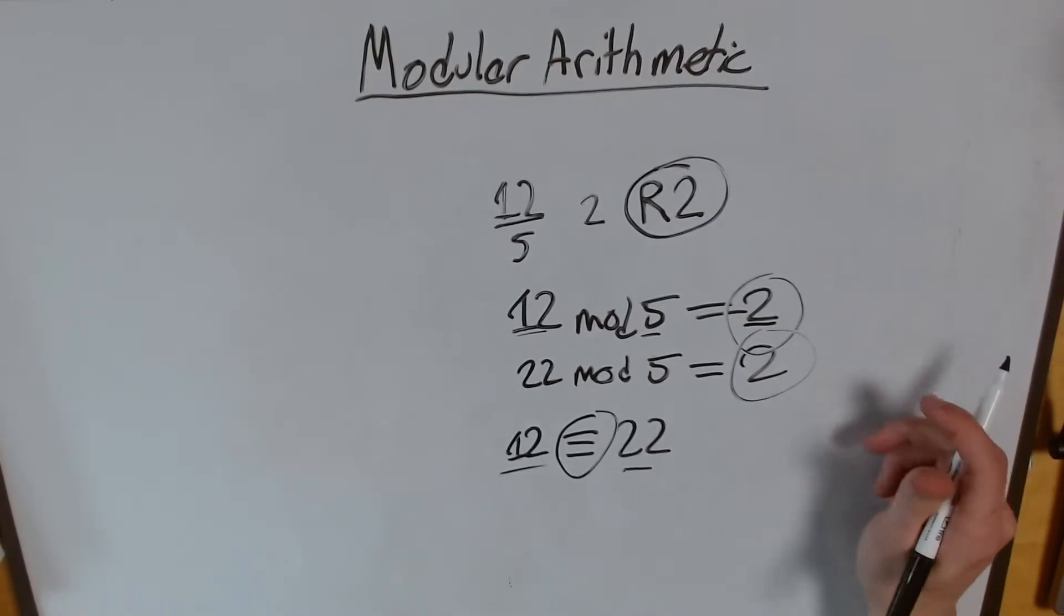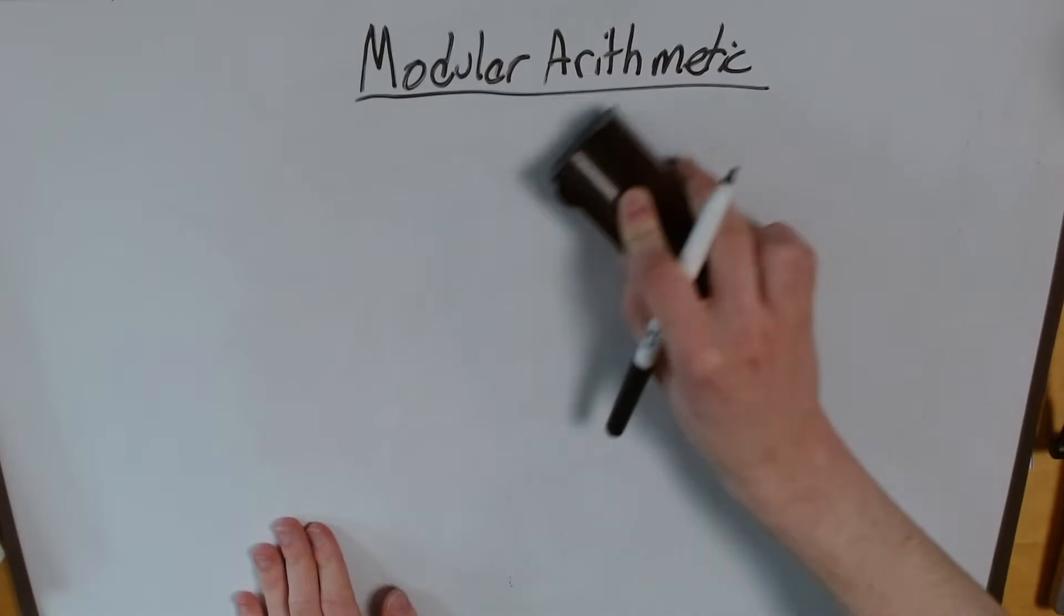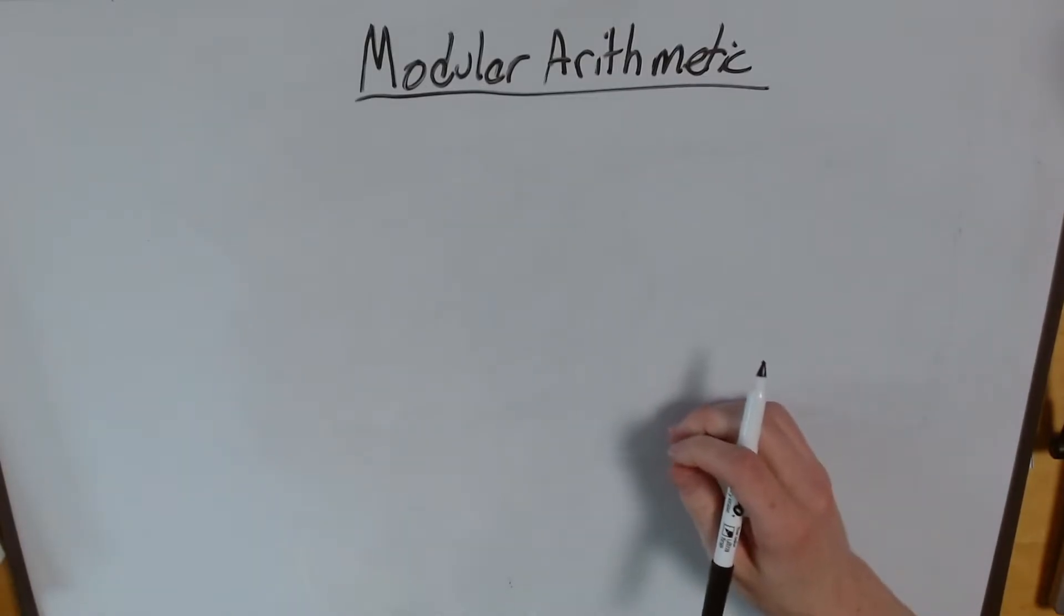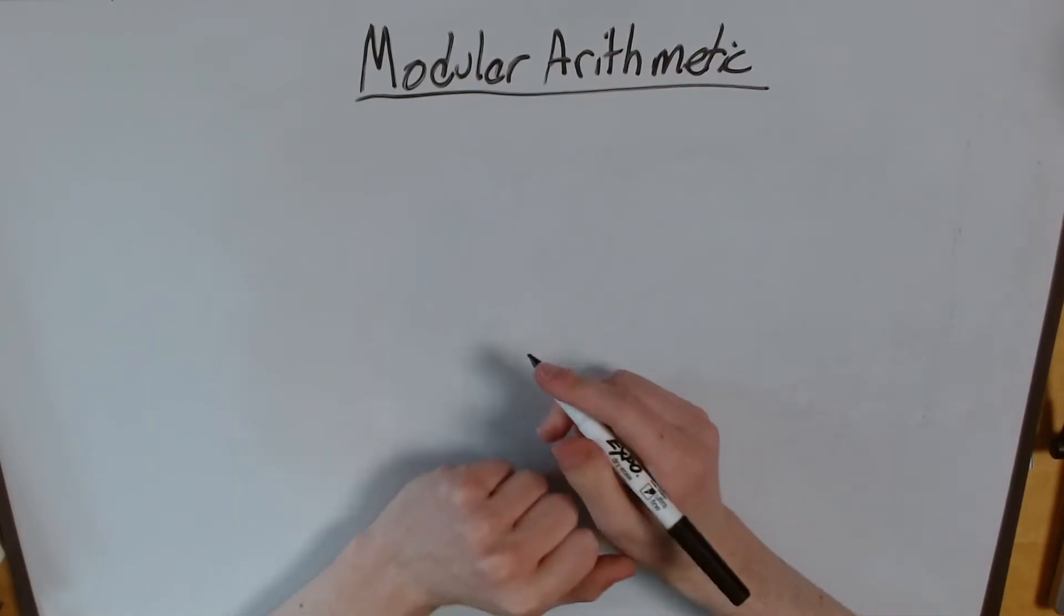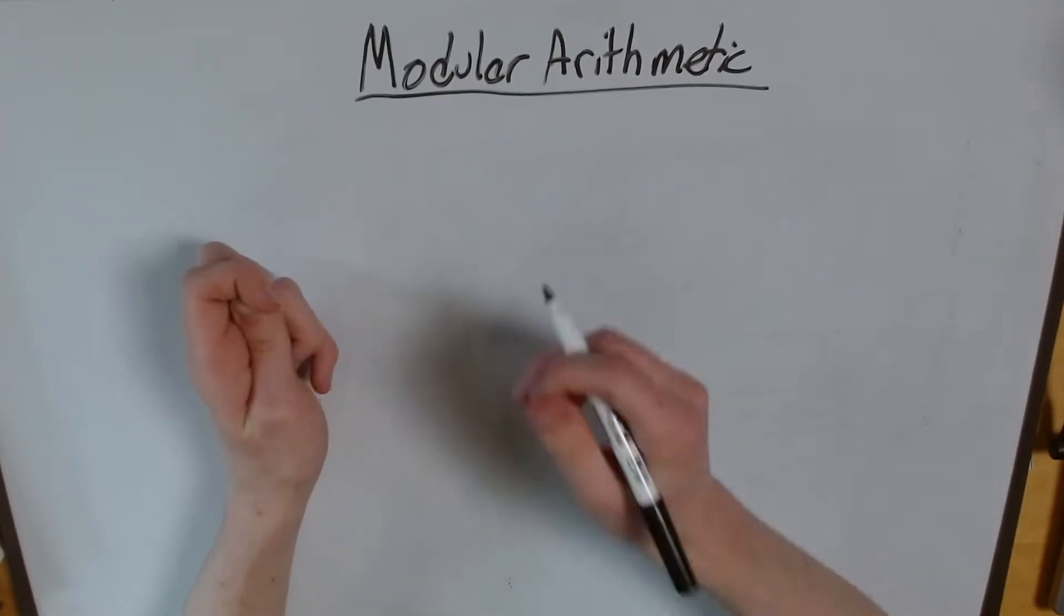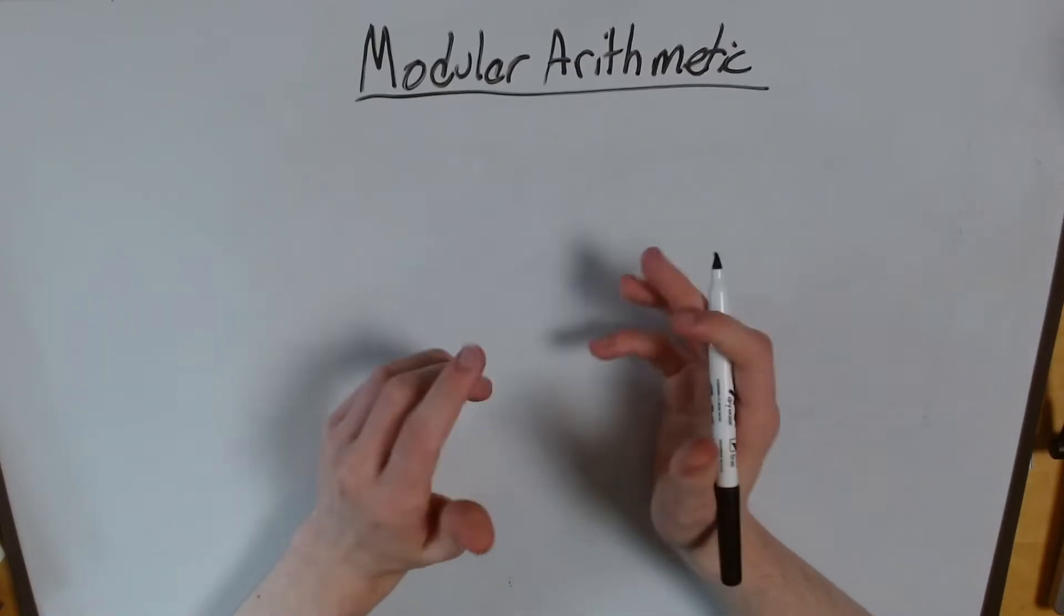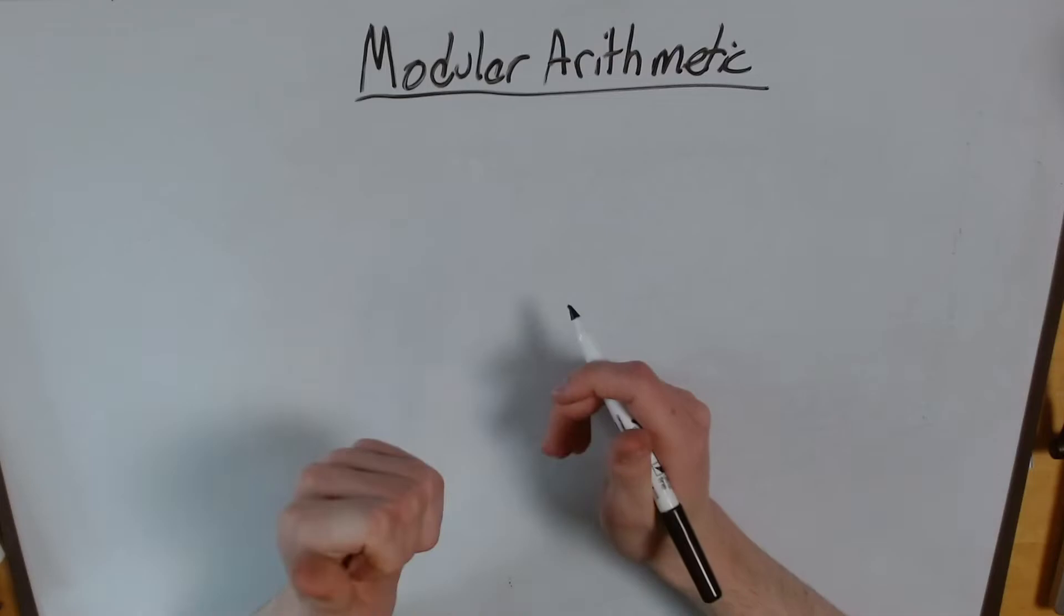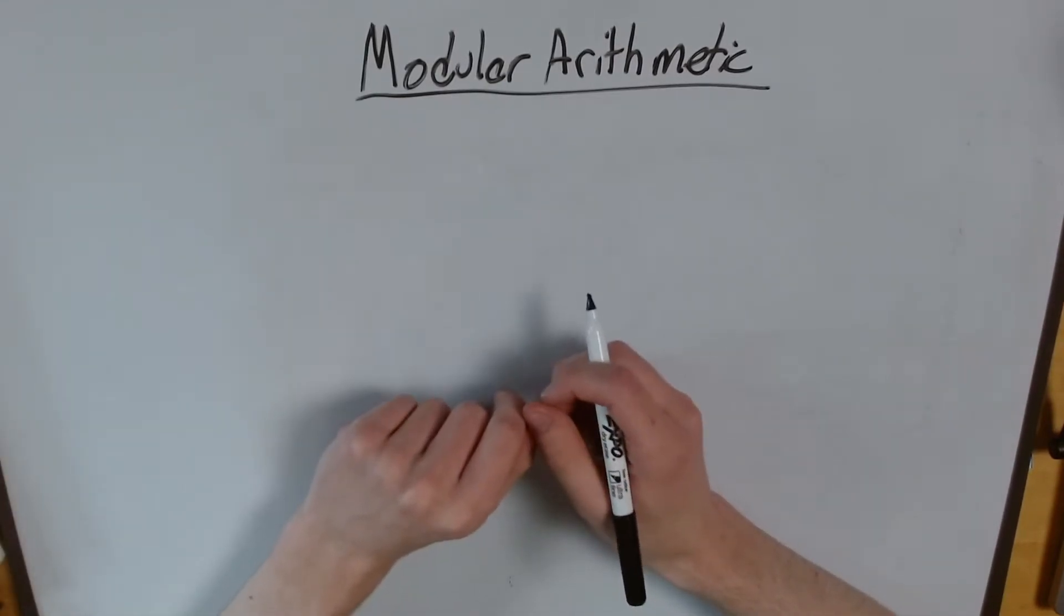Now, you might ask, what else can we do with this? Well, a great example is that we can also go backwards. So here, 12 divided by 5 is basically saying 12 is 2 more than the nearest multiple of 5. We can also have numbers that are 2 or 3 less than the nearest multiple of 5.